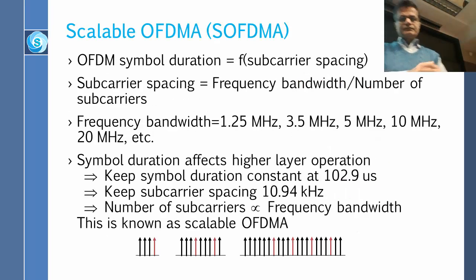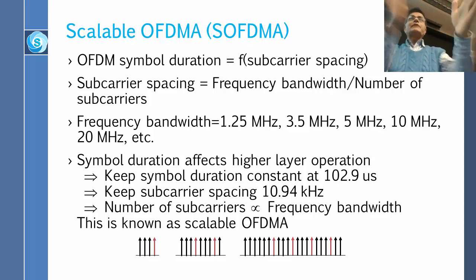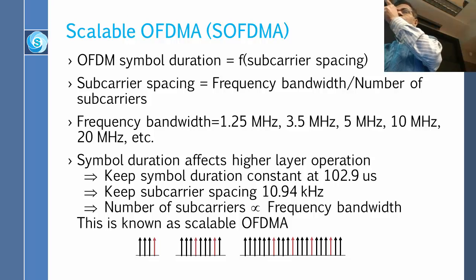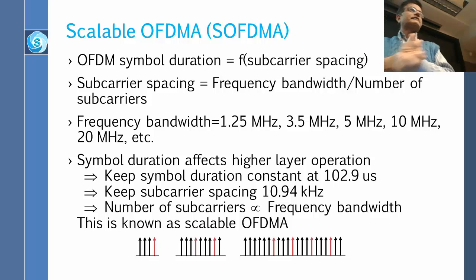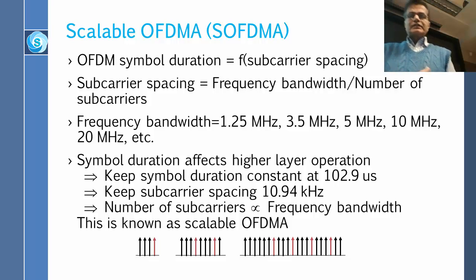Scalable OFDMA: symbol duration depends on the carrier spacing. If carrier spacing is 100 kilohertz, each carrier is 100 kilohertz wide. The carrier itself might have a frequency of 1 gigahertz, but the subcarriers are very closely spaced — 1.000, 1.001, 1.002 gigahertz — so the carrier frequency is high but each subcarrier width is very small. If the spacing is 10 kilohertz, the symbol is 1/10,000 seconds, which is 100 microseconds wide. Symbol duration is a function of the carrier spacing.